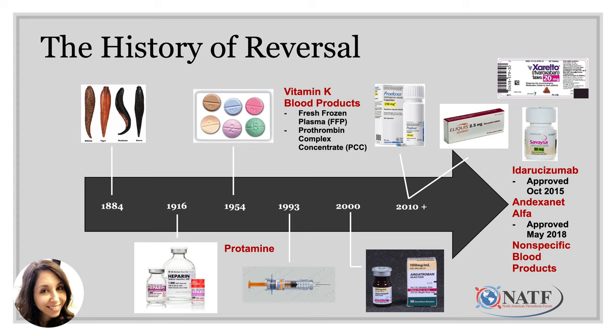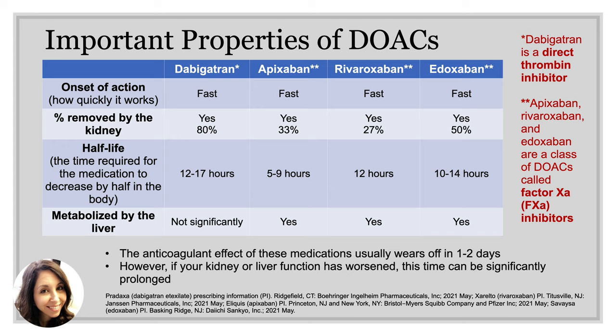As far as the DOACs go, we started using them as early as 2010, but it wasn't until 2015 that we actually started having specific agents for reversing these medications. While it seems crazy that we used these drugs for almost five to eight years without a reversal agent, we actually did fairly well, due in large part to the quick onset, offset, and good safety profile of these medications. Unlike warfarin, which can take five to seven days to wear off, the therapeutic effect of DOACs is typically reversed within one to two days if someone stops taking those drugs — which is why compliance is so important when you're on these meds to treat an embolic event.